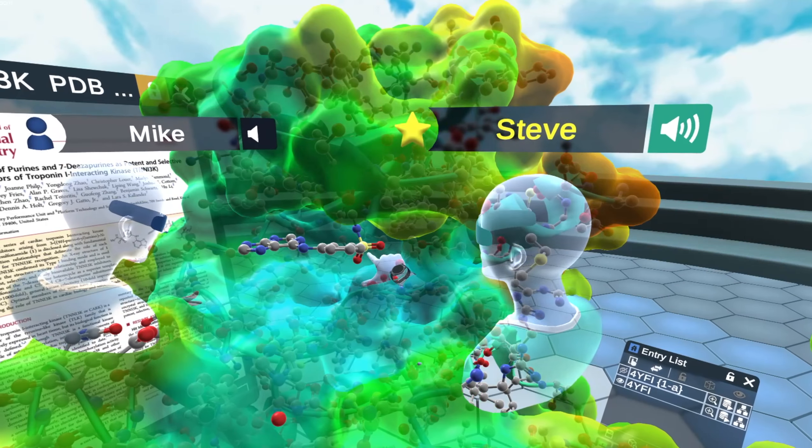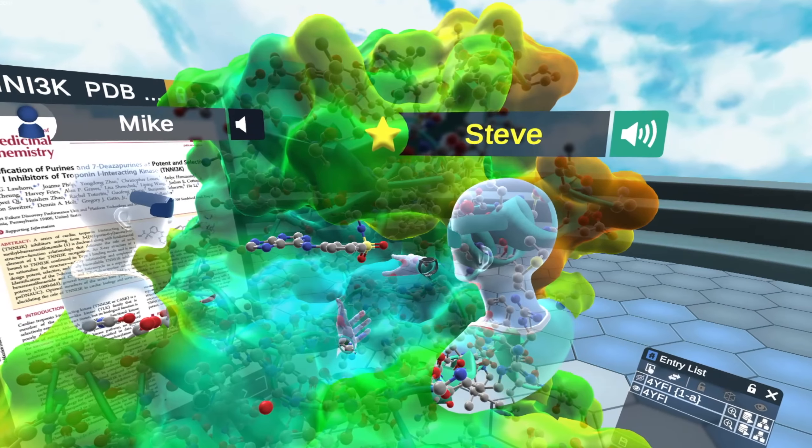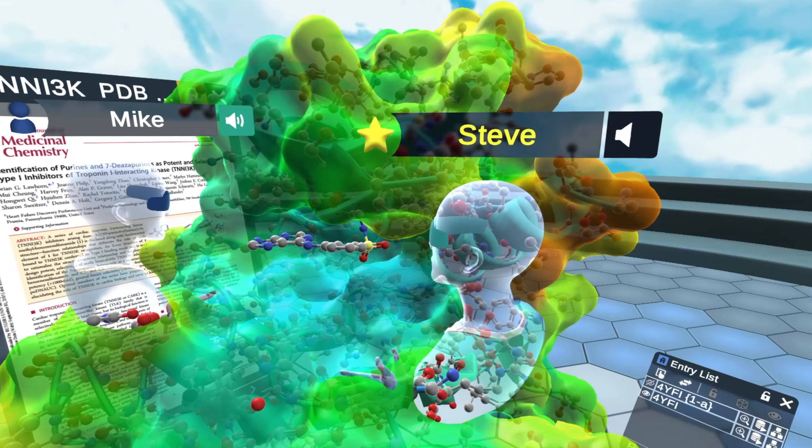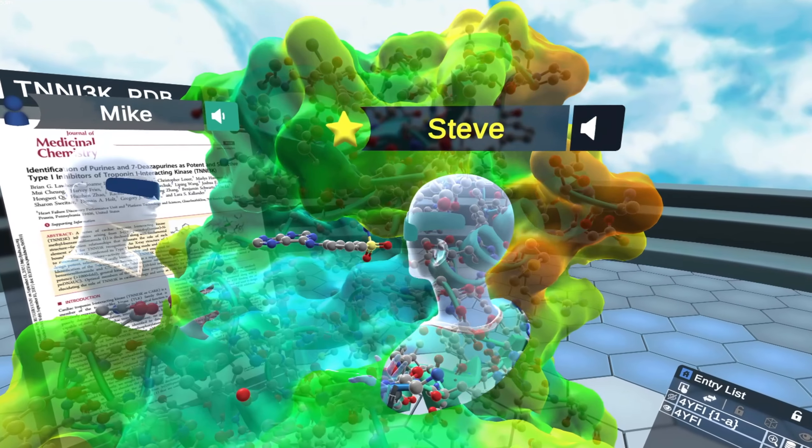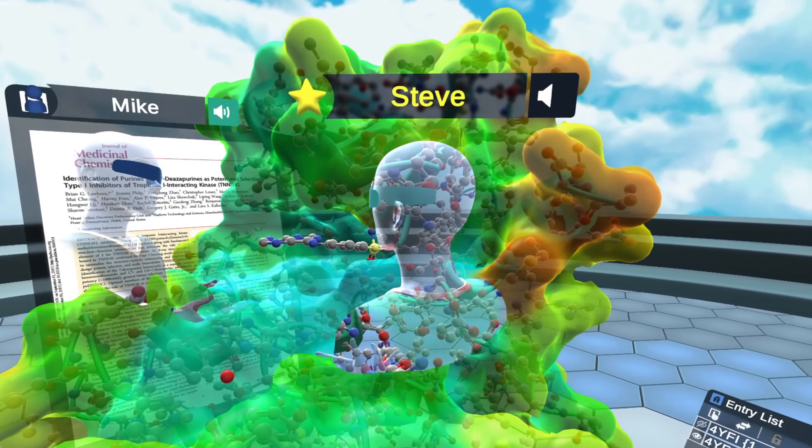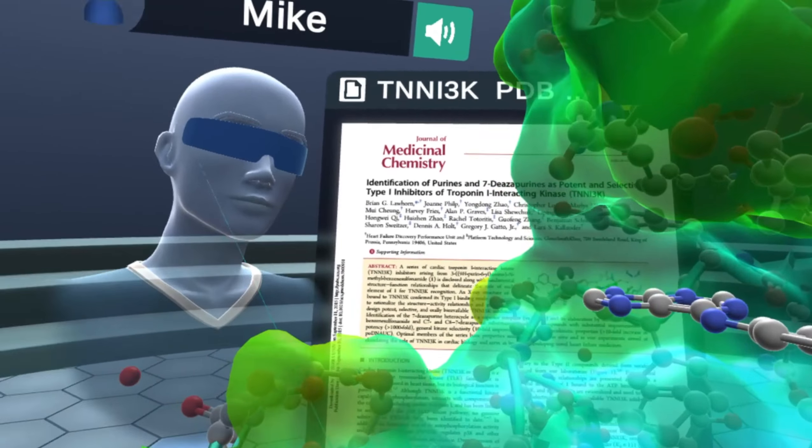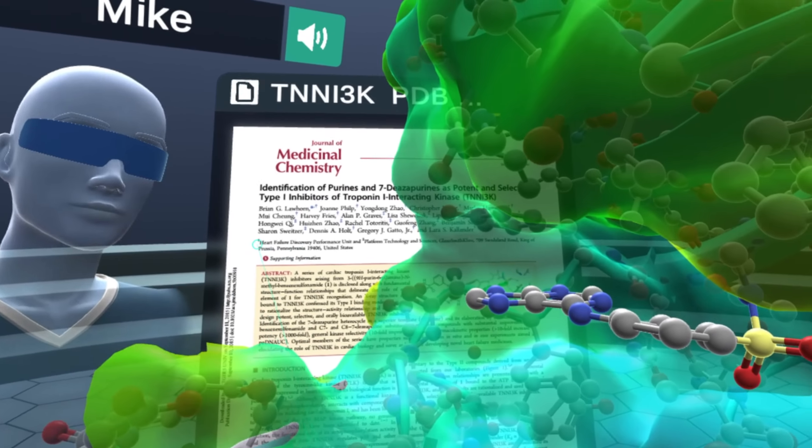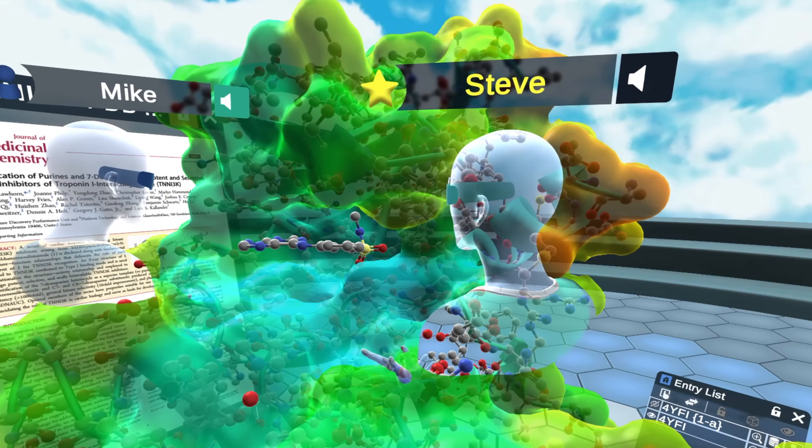And so when you say screen, this was found with a high throughput physical screen or this was done virtually? This was done with a high throughput physical screen, but the scientists at GSK know a lot about molecules that inhibit kinases. So they actually have a special set of kinase inhibitors that they can test in assays for kinase inhibition. And so this molecule came out of this kinase set that they had, this kinase inhibitor set.